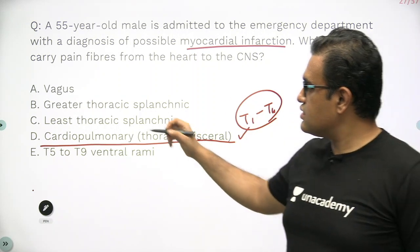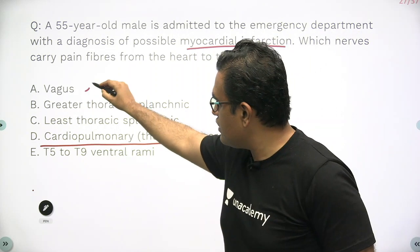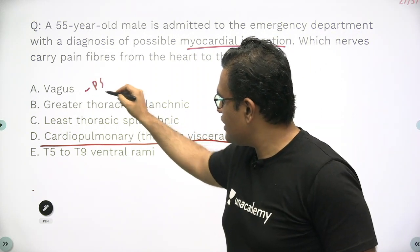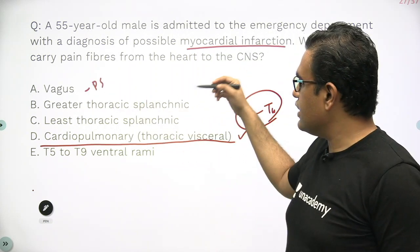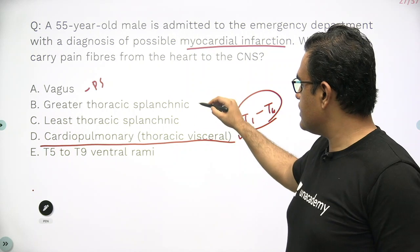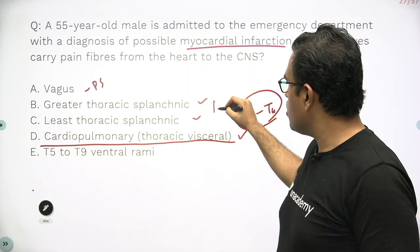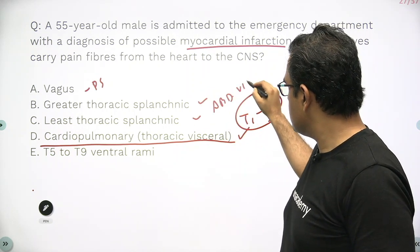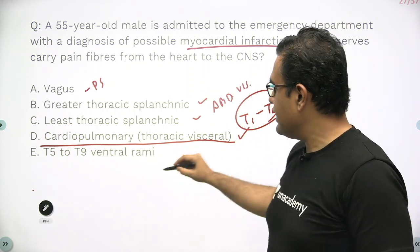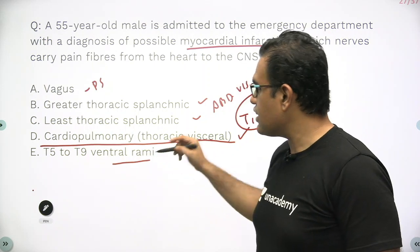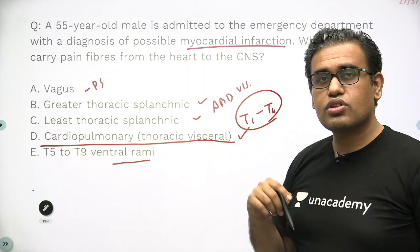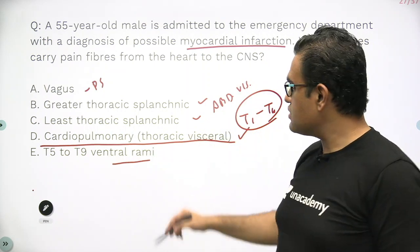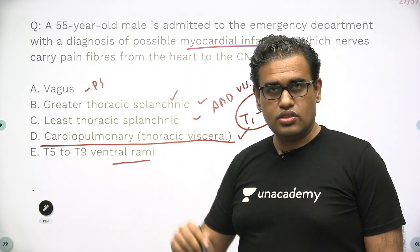Looking at the other options: Vagus is a parasympathetic nerve. Greater thoracic and least thoracic splanchnic nerves are mainly for the abdominal and pelvic viscera. T5 to T9 ventral rami are actually the ones that form the greater thoracic splanchnic nerves.